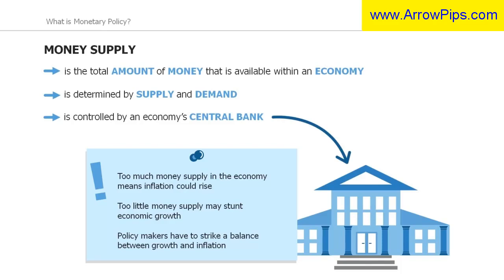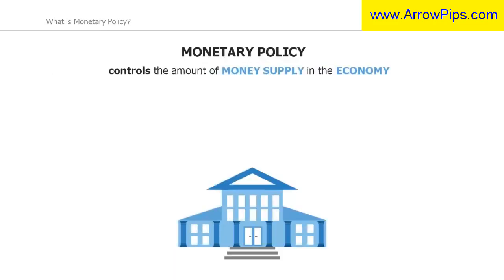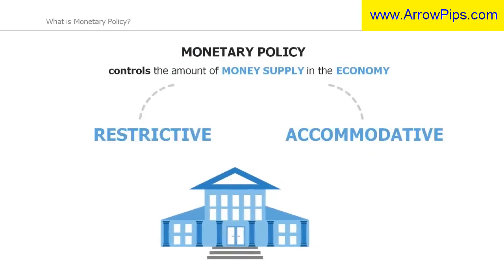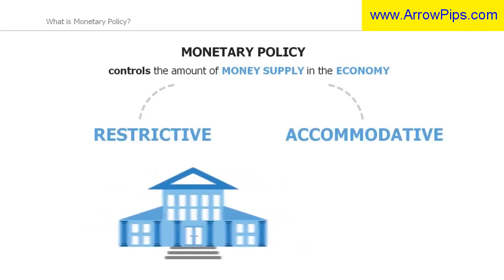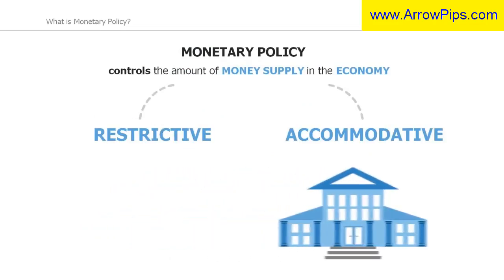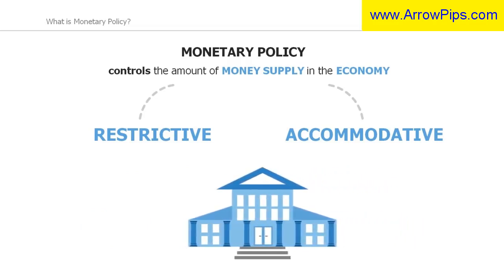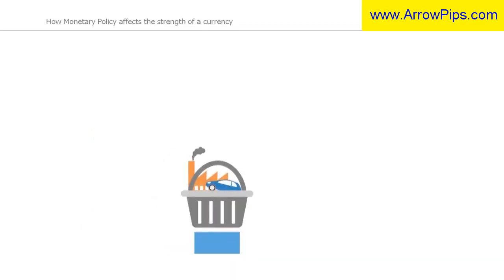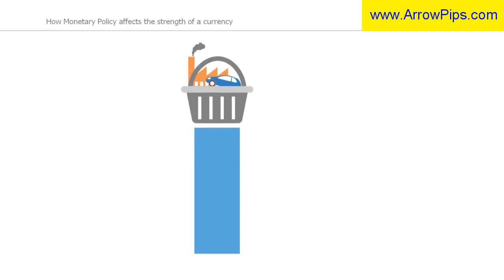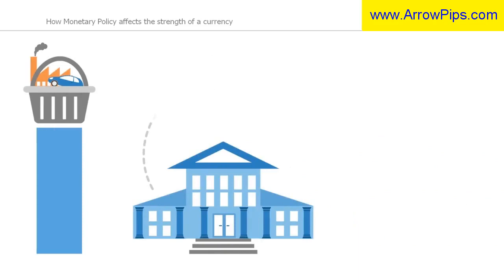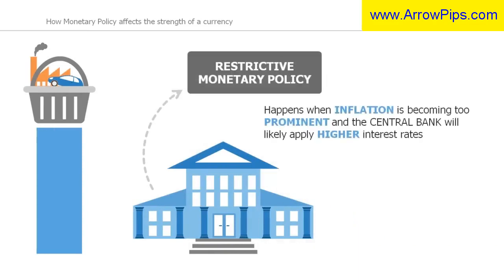We will now explain how a central bank goes through the use of monetary policy. Monetary policy can be either restrictive or accommodative, and a central bank will decide on which, depending on the current economic circumstances. If policymakers observe that inflation is becoming too prominent because the economy is expanding too quickly, a central bank may consider restrictive monetary tightening, such as raising the interest rate.